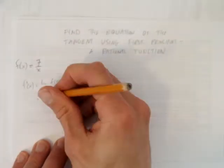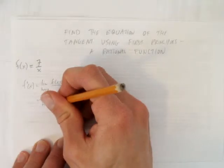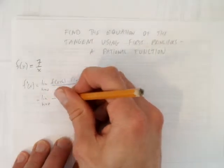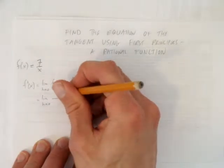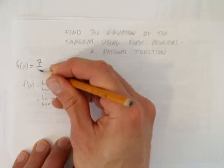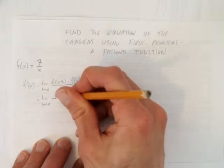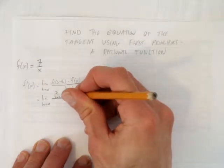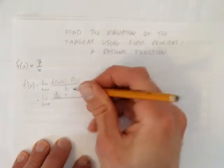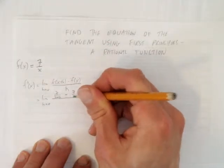So what we want to find out is, what's the limit as h approaches 0 of 7 over whatever x is, in this case x is x plus h, so we sub that in, minus f at x, which is just 7 over x all over h.